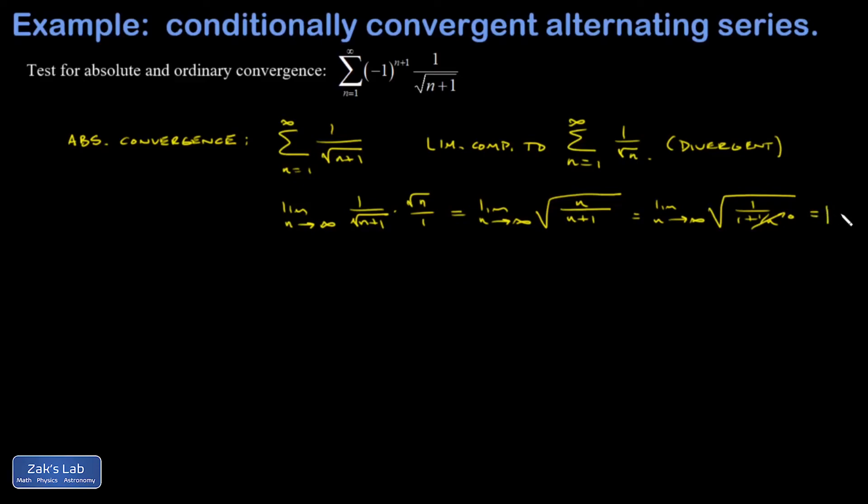Because I got a finite number out of it, it means the convergence behavior of these two series must be the same. Therefore, the series of absolute values diverges. So our alternating series is not absolutely convergent, but it might still be convergent in the ordinary sense.